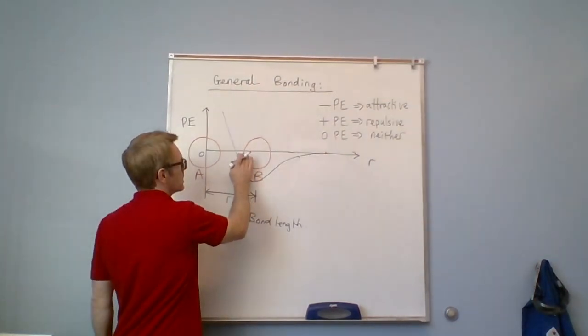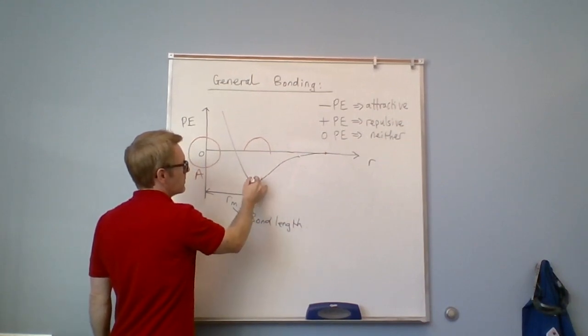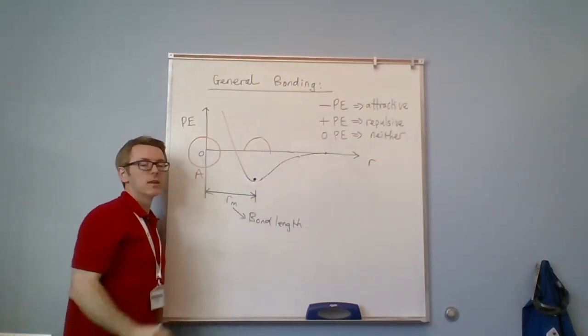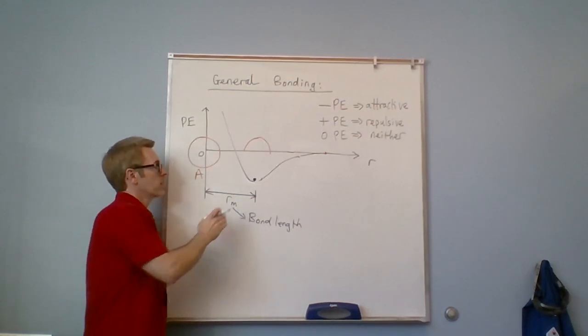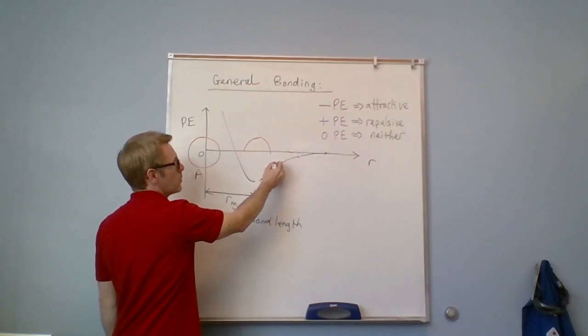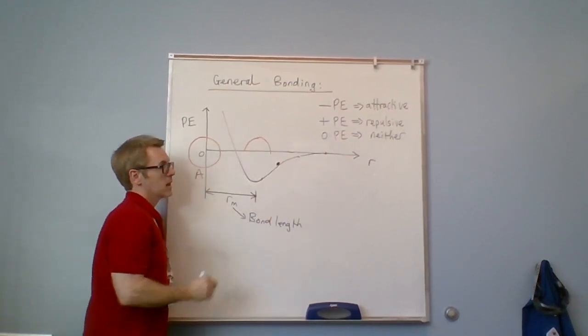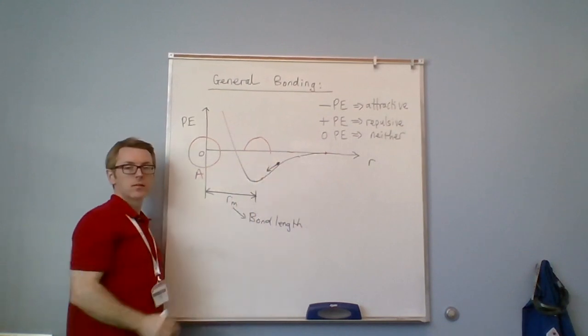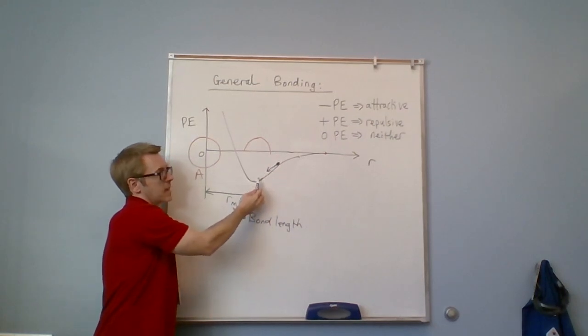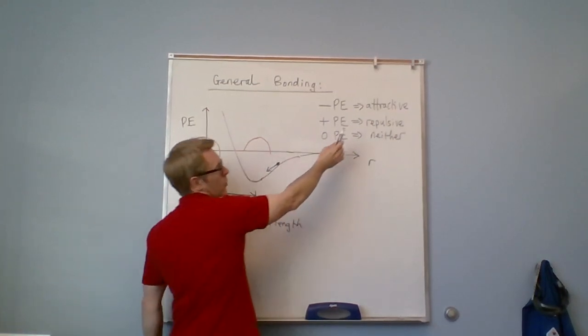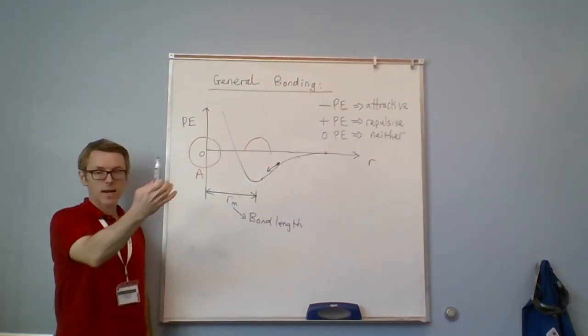So another way to think of this is imagine a marble. You know, if you put the marble right at the bottom of this potential well it will stay there. If you put a marble anywhere to the right side of the bottom of this well, it will naturally roll to the left to an increasingly negative potential which is attractive, it's attracted down into the well.